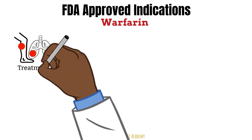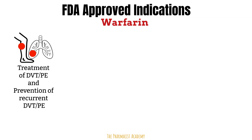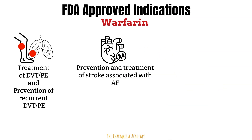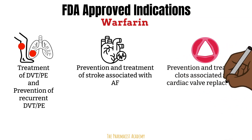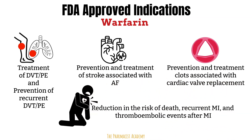Warfarin is used for treatment of DVT and PE and prevention of recurrent DVT and PE. It's also used for prevention and treatment of stroke associated with atrial fibrillation — very different from DOACs, which are only used for prevention of stroke in non-valvular atrial fibrillation. Warfarin is also used for prevention and treatment of clots associated with cardiac valve replacements, and for reduction in the risk of death, recurrent MI, and thromboembolic events after MI.